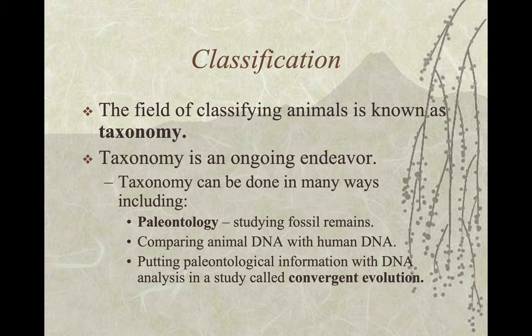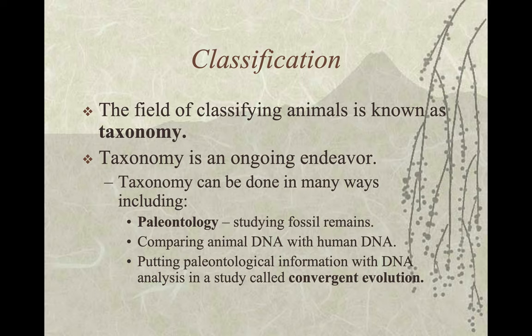The field of classifying animals is known as taxonomy. Taxonomy is an ongoing endeavor and can be done in many ways, including through paleontology — the study of fossil remains. We can compare animal DNA with human DNA, and we can combine paleontological information with DNA analysis in a study called convergent evolution. We're not only looking at what we look like right now, but trying to see what we looked like in the past to compare our former cells with our current cells.